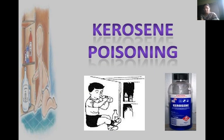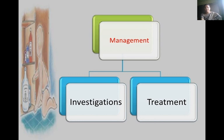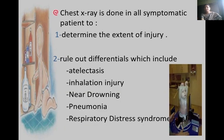The most common household poisoning is kerosene poisoning. It is common in communities where kerosene is a major household fuel, and the circumstance is usually accidental ingestion mistaken for water. Management involves investigations and treatment. Investigations include full blood count, electrolytes, urea and creatinine levels, and liver function tests. A chest X-ray is done in all symptomatic patients to determine the extent of injury and to differentiate from atelectasis, inhalation injury, near-drowning, and pneumonia.